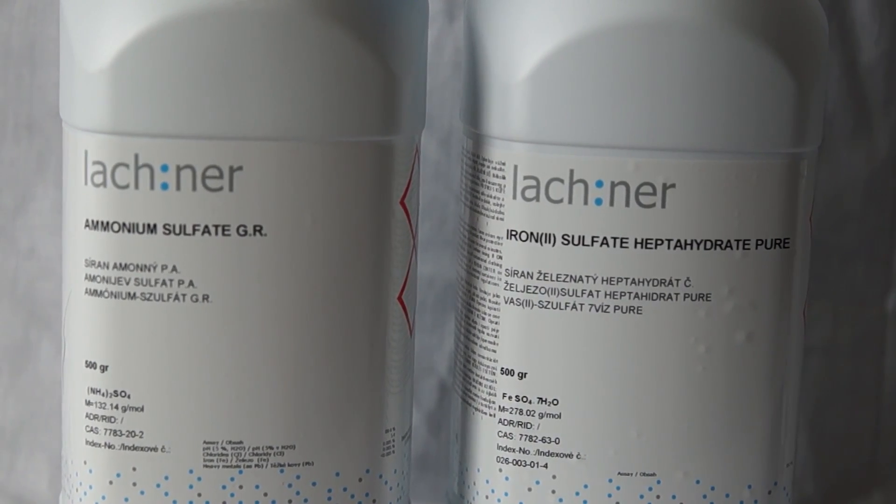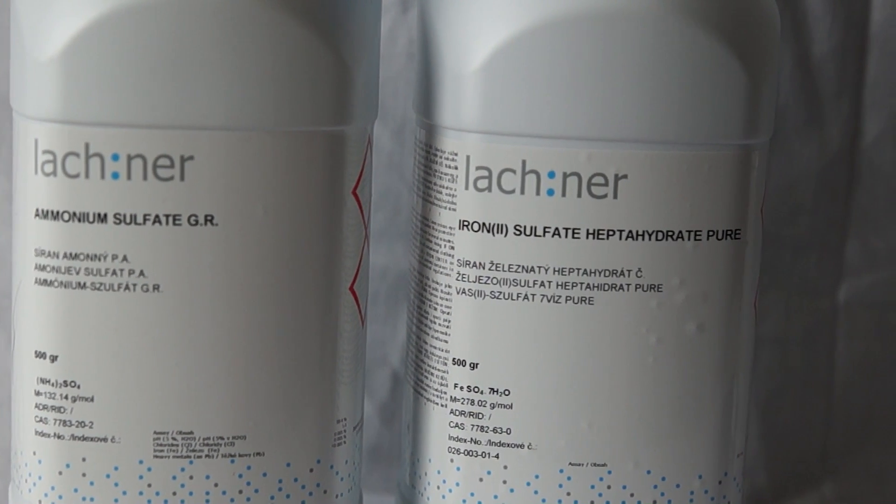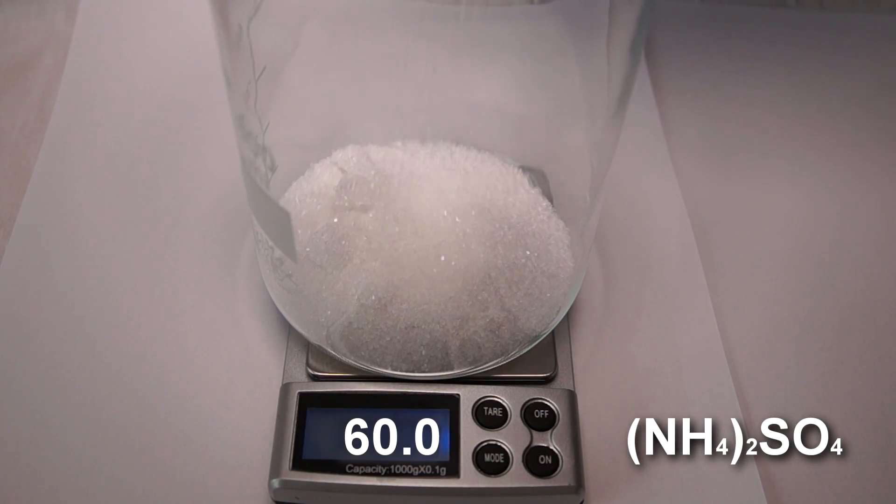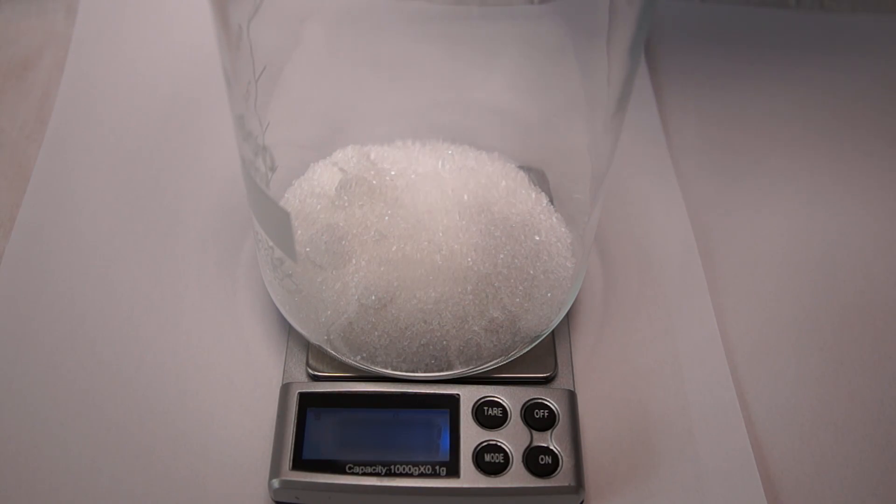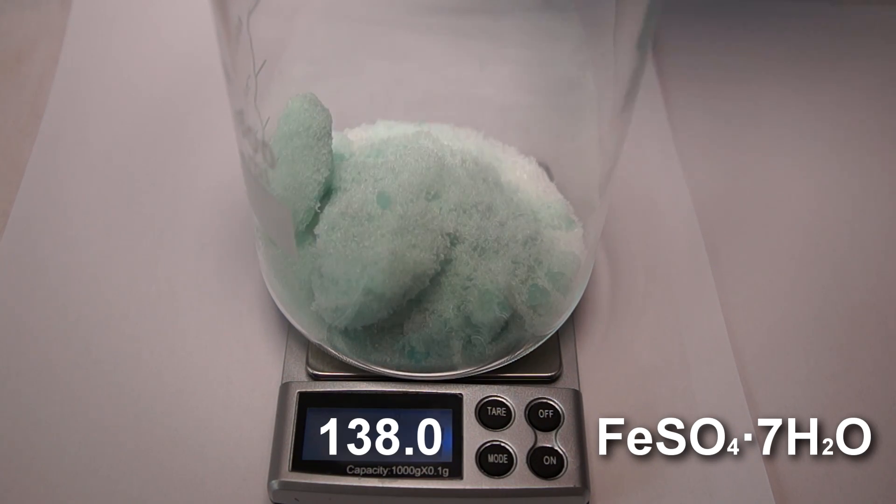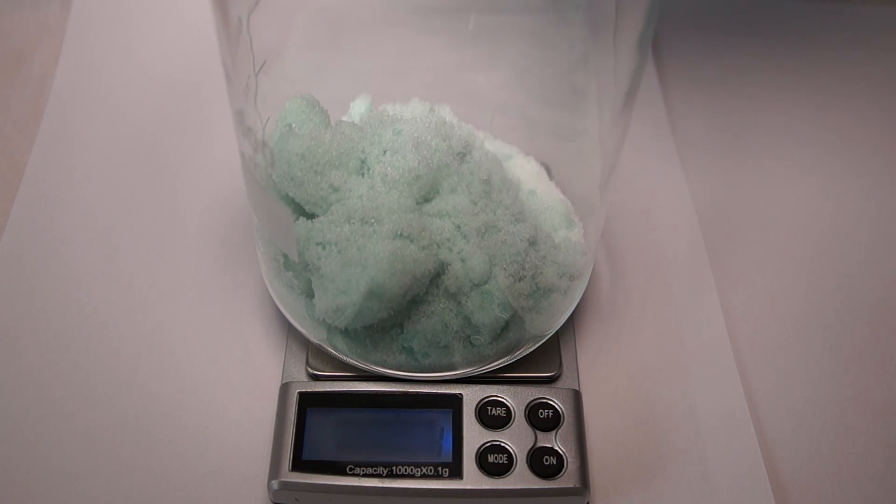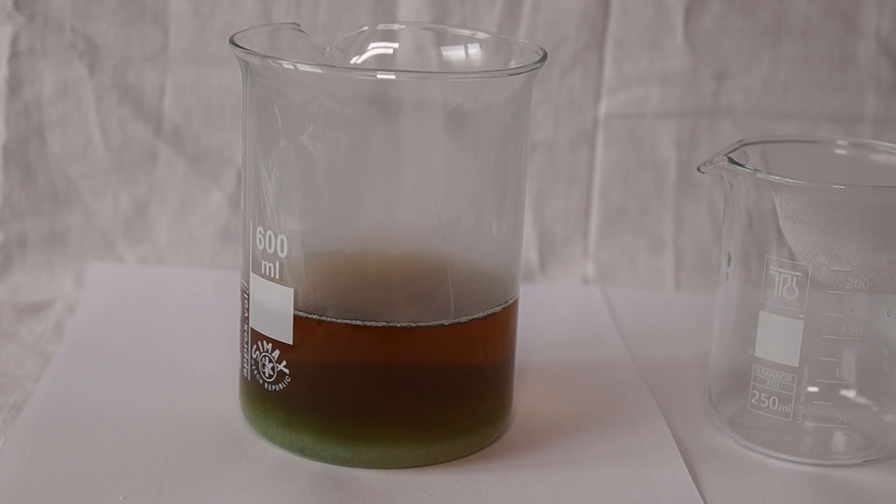Take a large glass and weigh 60 grams of ammonium sulfate and 138 grams of iron(II) sulfate in it. Next, add 400 milliliters of very hot water to the mixture.